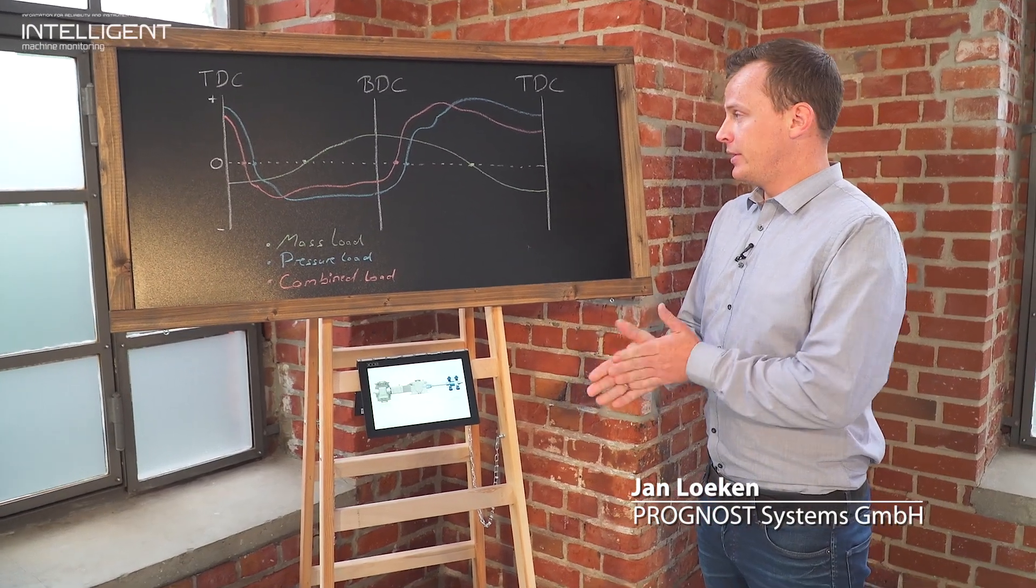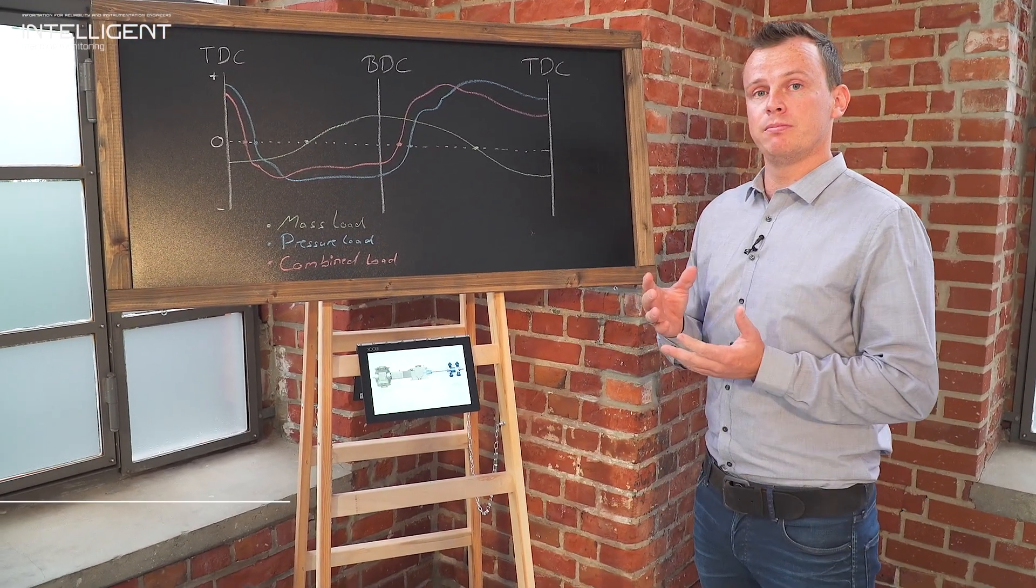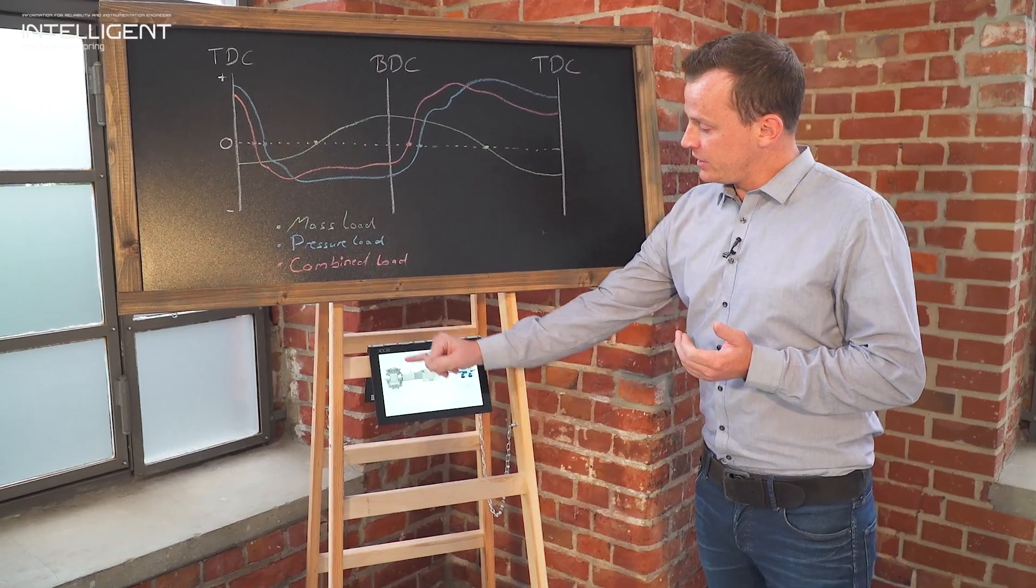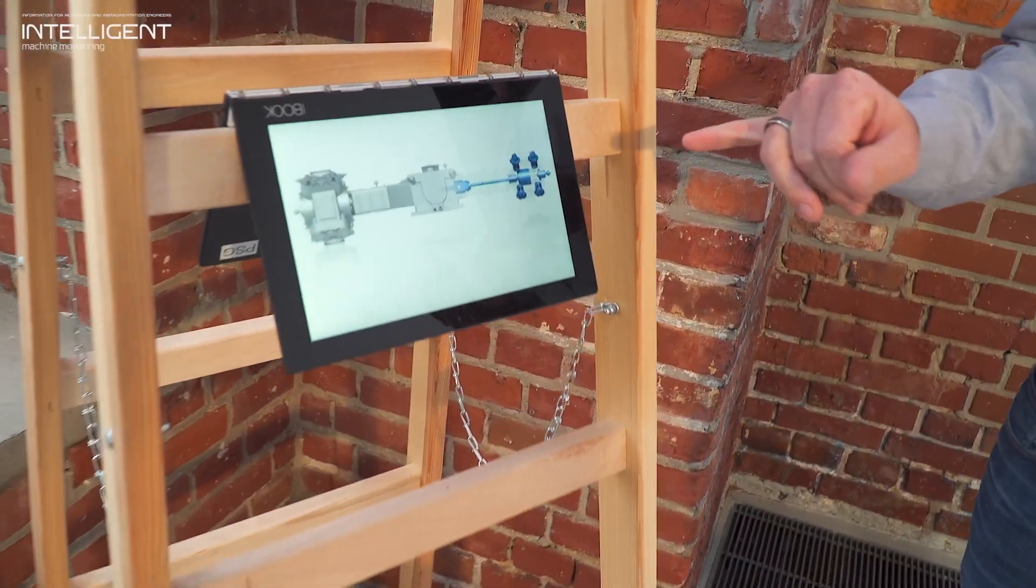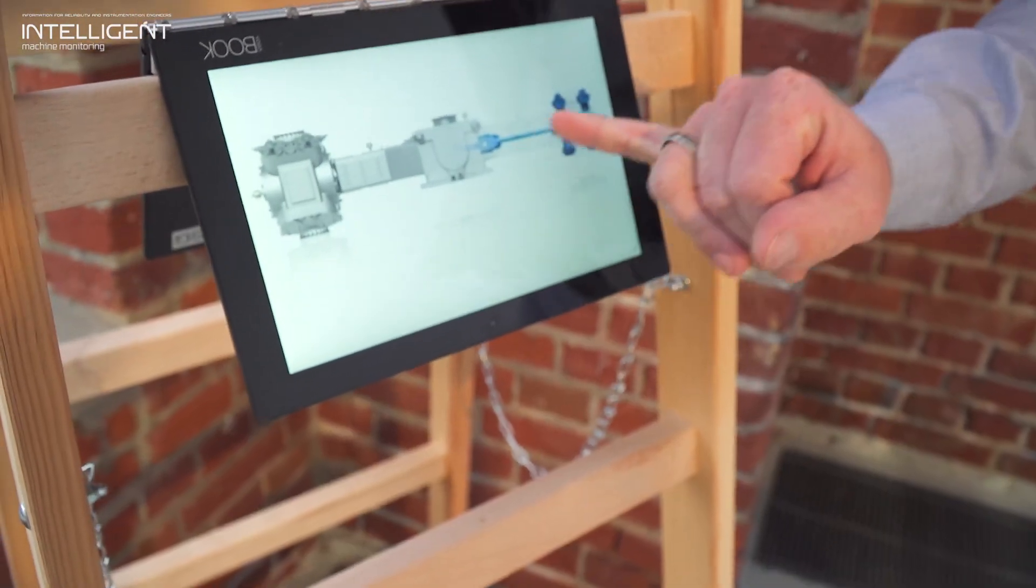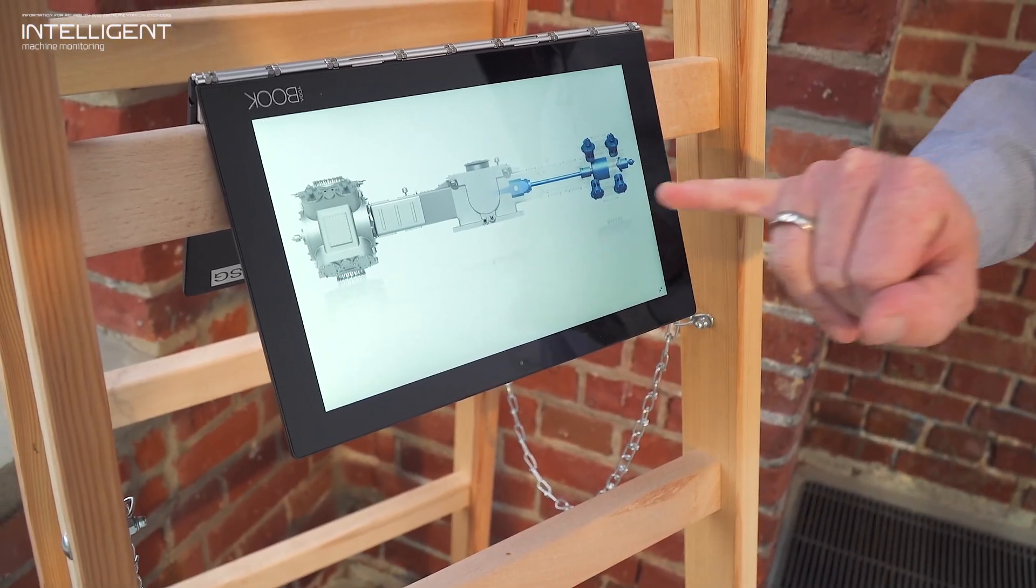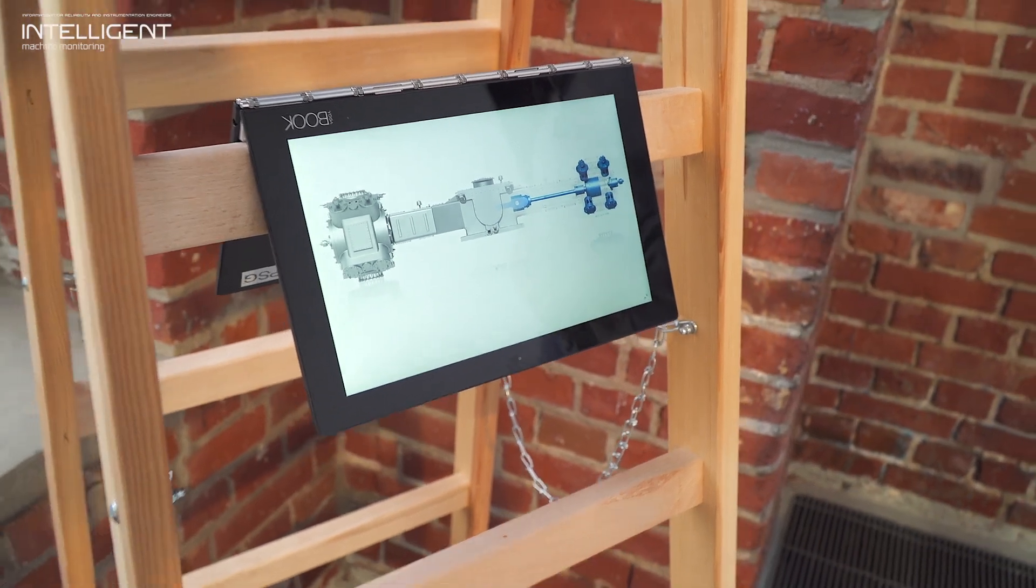Mainly on the piston rod because that is one of the most important forces. Here on this little screen you see an example of one cylinder which is open and we see a cross head, piston rod, and piston finally, and we will talk about the forces on the piston rod.